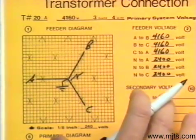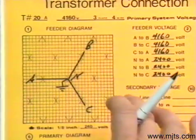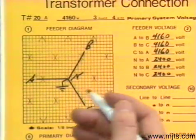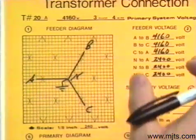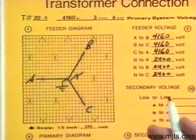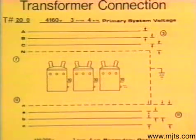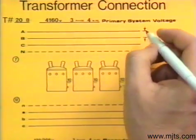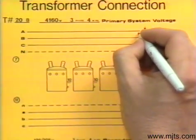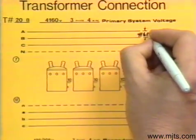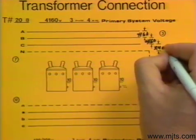We're making three-phase transformer connections, and in all cases we're putting the feeders up above. Even when we get into open-Y connections, we're still going to put all three phases and the neutral if we have a Y system. In step three, we indicate the voltages available: between our phases we have 4160, and phase-to-ground we have 2400 volts.